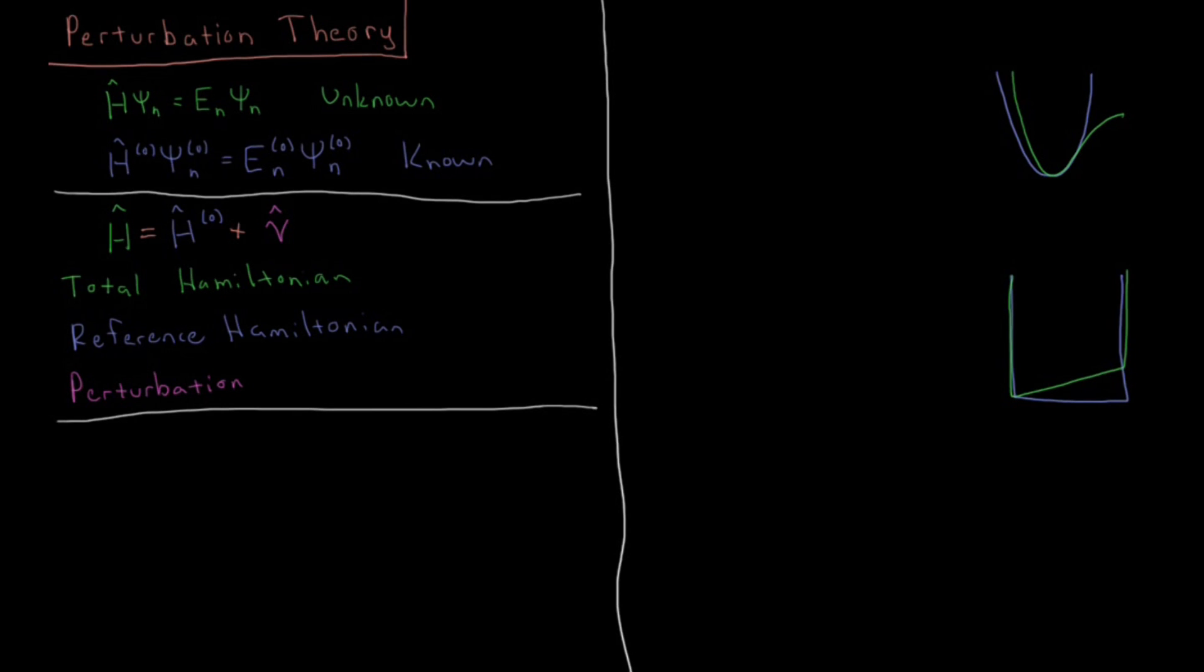So in perturbation theory we have a Schrodinger equation, H psi equals E psi, say for some given state n within the system. And the exact solution to this is unknown. The exact value of these energies and the exact form of these wave functions is unknown.